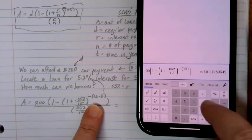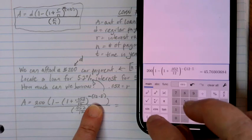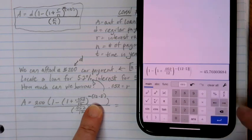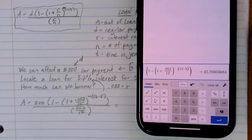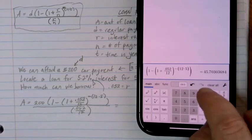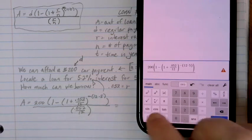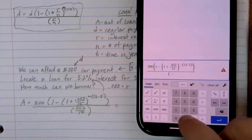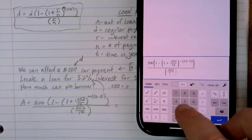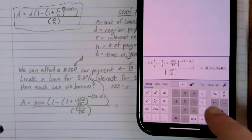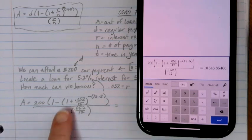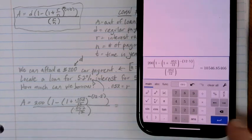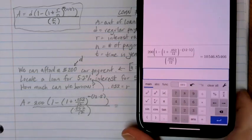12 times 5, close the parentheses and then move to the main level here to close the big set of parentheses that's all the way across the top. Then I need to divide this entire expression by the 0.052 over 12. Close the parentheses, and it looks just like our expression right here. We hit enter and we get $10,546.85.